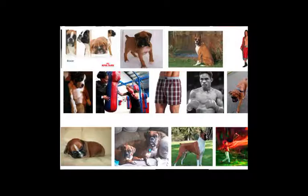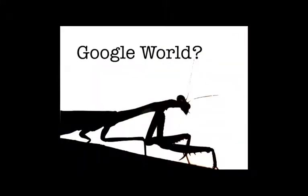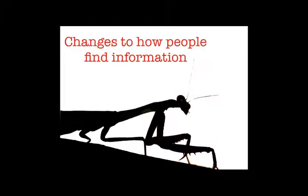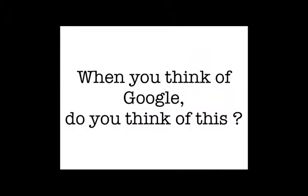Most of you will have it by now. If you don't, we're coming back to it. So I'm going to start off with the Google world. When I'm talking about the Google world, what I'm really talking about is changes to how people find information — not just online, because a lot of sources that were once offline have now become online. So it's generally how people find information, even though we're talking about the online world.